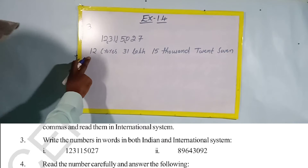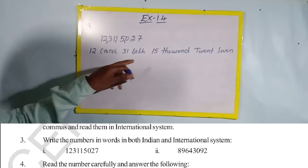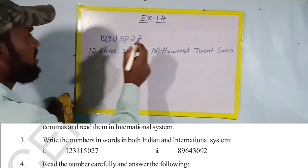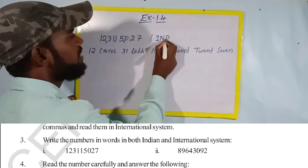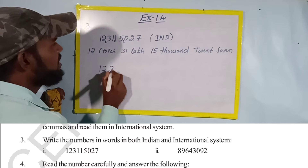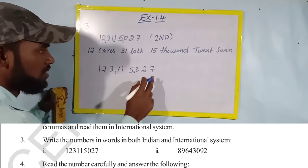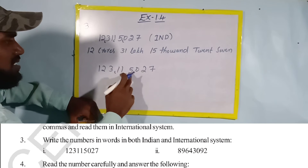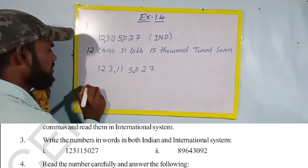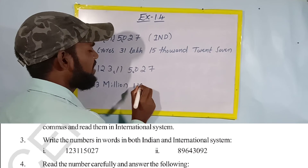Please write the words in full — write 'twelve' not '12', write 'thirty-one' not '31'. I am writing in abbreviated form only for convenience because there is not enough board space. Now for the international system: same number 123,115,027 — place commas after every three digits. Reading: one hundred and twenty-three million, one hundred and fifteen thousand, twenty-seven.